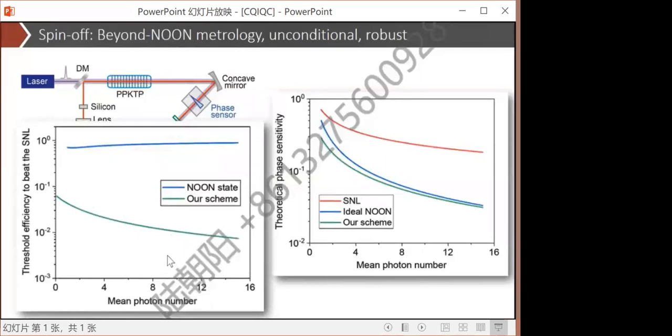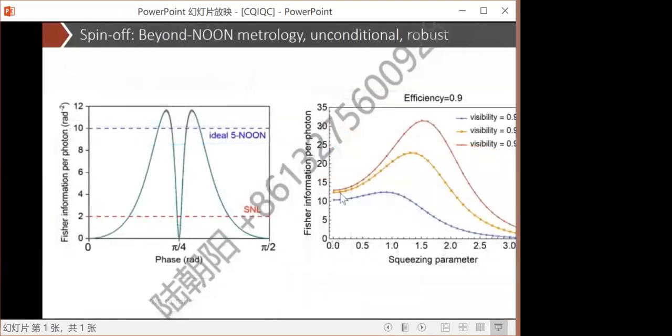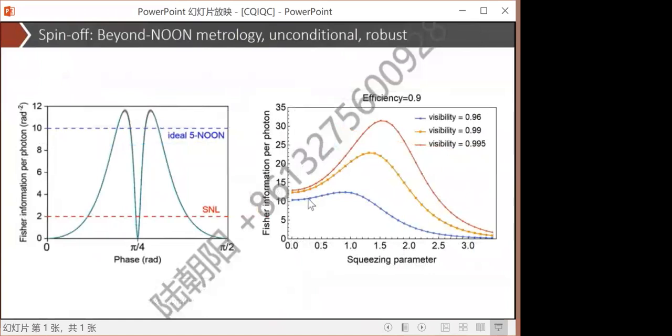For example, to actually show unconditional advantage for about 10 photons, for the noon state, it must have fairly high, about 90 percent efficiency. But using this scheme, it can tolerate up to 99 percent photon loss. In our initial experiment, we have directly observed about six-fold enhancement above the shot noise limit in the Fisher information per photon. This is without subtracting for any photon loss and imperfections, and can even outperform ideal five-photon noon state. Ideal meaning it's created deterministically and measured with 100 percent efficiency and there's no loss in the circuit.